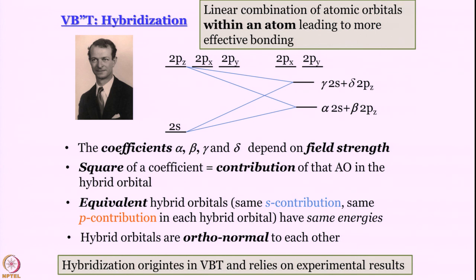In valence bond theory, hybridization is used to generate appropriately oriented orbitals. Hybridization provides directionality, and that is its strength. In molecular orbital theory, the strength is delocalization. Delocalization and directionality do not go hand in hand. So in molecular orbital theory it is possible to use hybrid orbitals, but that gives a localized MOT which we do not prefer. Rather, we want to build a delocalized MO picture of polyatomic molecules — and the molecule we want to discuss today is methane.